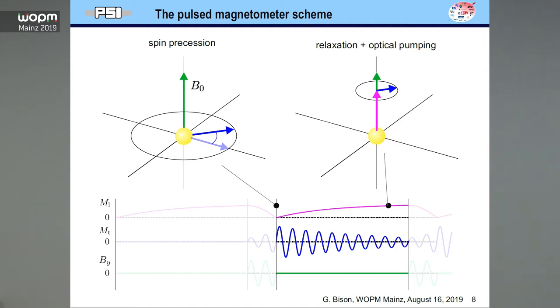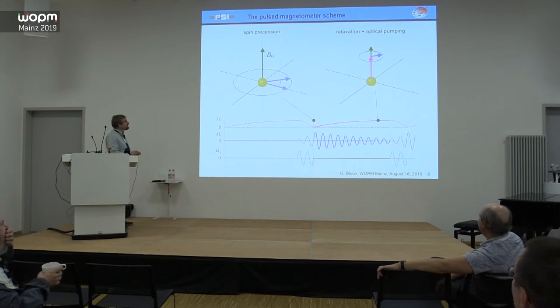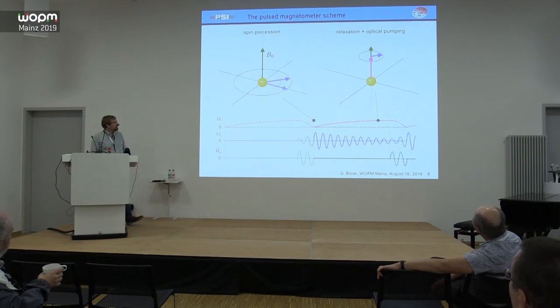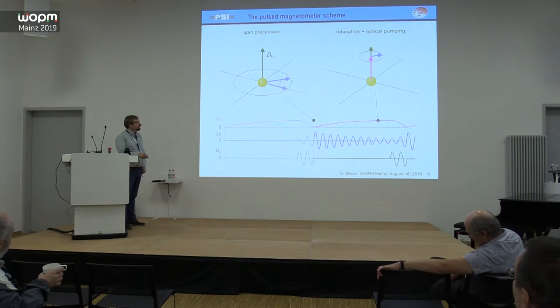We have spin decoherence, so this circle on which the spin goes around the magnetic field becomes smaller in time. Since the pump laser is on all the time during that decay in the transverse direction, we build up the longitudinal direction again. That means we can start the process directly again after we have recorded this free spin precession signal, then here we can have the next pi-half pulse.